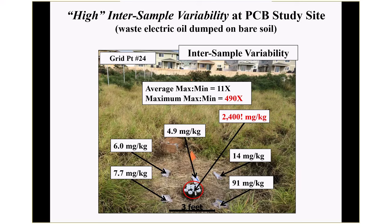For inter-sample variability at the PCB site between co-located samples: 4.9 ppm on one discrete sample, and a foot or two away, 91 ppm. One particular sample tested multiple times averaged 2,400 ppm — right beside the 4.9 ppm sample. This is a true hot spot — it's only maybe a foot across the size where we collected the sample. Average variability between co-located samples at the PCB site was similar to intra-sample variability — over an order of magnitude.